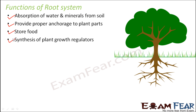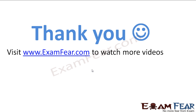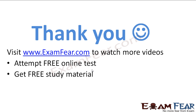As we go ahead, we will see that roots in many different plants also perform many other functions besides these primary ones. When we have discussed everything about roots, we will again compare the functions of the root system and see that besides absorption of water and minerals, providing proper anchorage, food storage, and production of plant hormones, they also perform so many other functions in different types of plants. Please visit www.examfew.com to watch more videos, attempt free online tests, get free study material, and find tutors and mentors. Thank you.